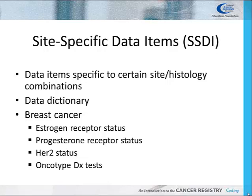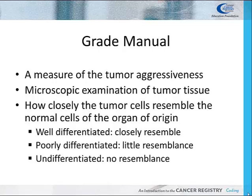Examples of site-specific data items collected by a cancer registrar for breast cancer include estrogen receptor status, progesterone receptor status, HER2 status, and Oncotype DX tests. The Grade Manual is used to assign codes for the tumor's grade.